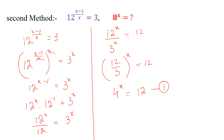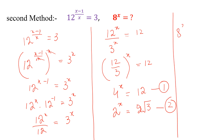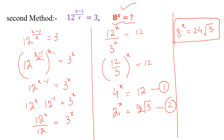This is equation 1. Taking the square root, 2 to the power x is equal to 2 square root of 3 — this is equation 2. Multiplying these two equations, we get 8 to the power x is equal to 24 square root of 3. This is the value of 8 to the power x. Like the video, share with your friends, and don't forget to subscribe to my YouTube channel. Thank you.